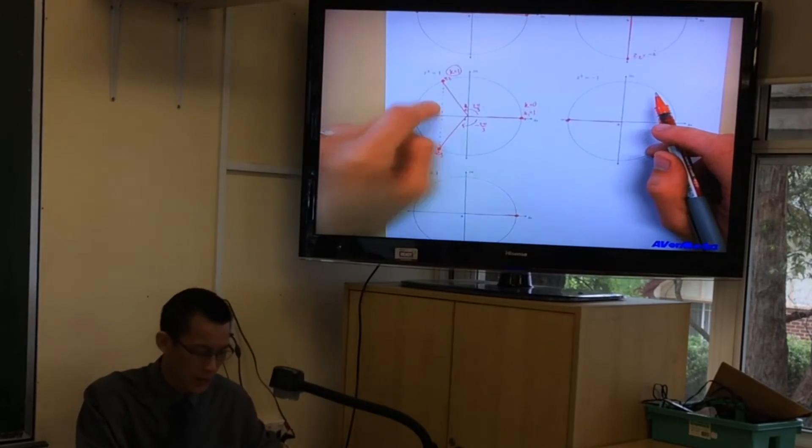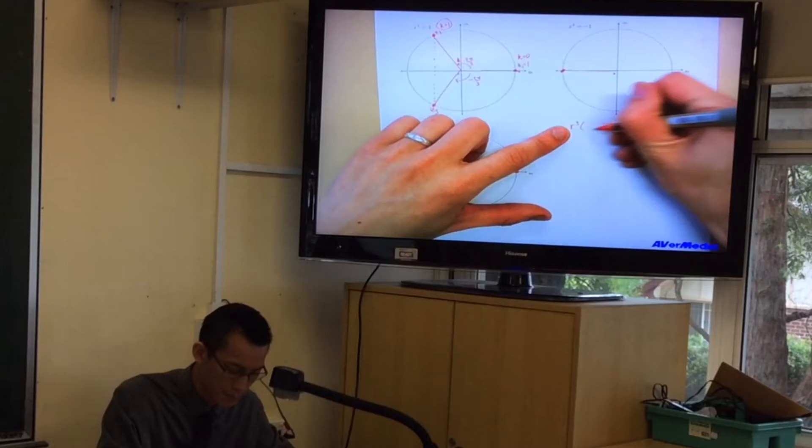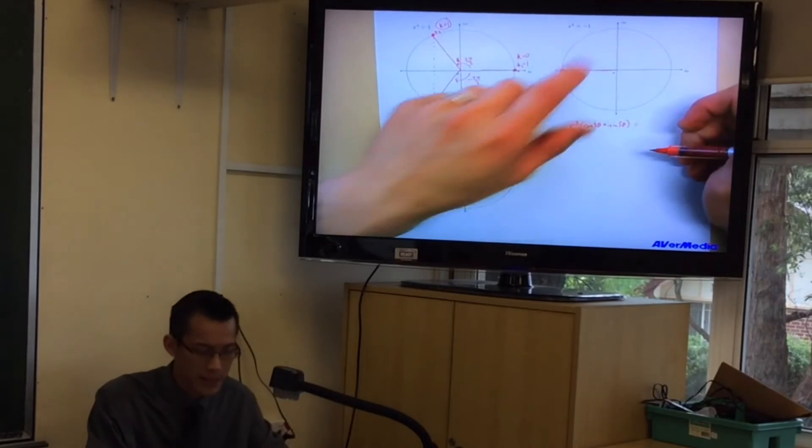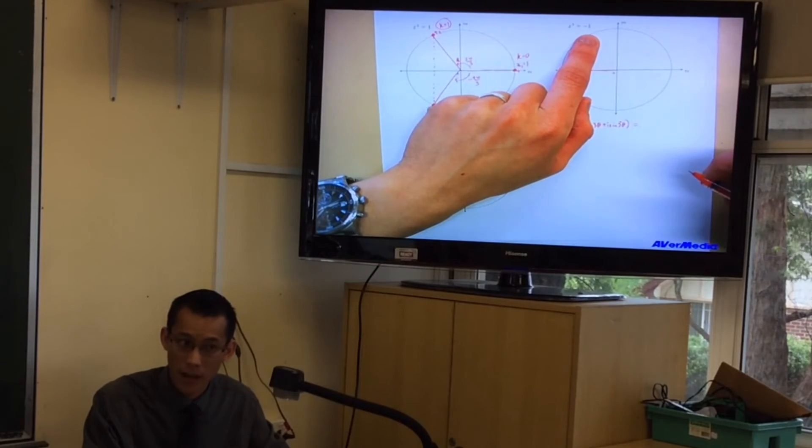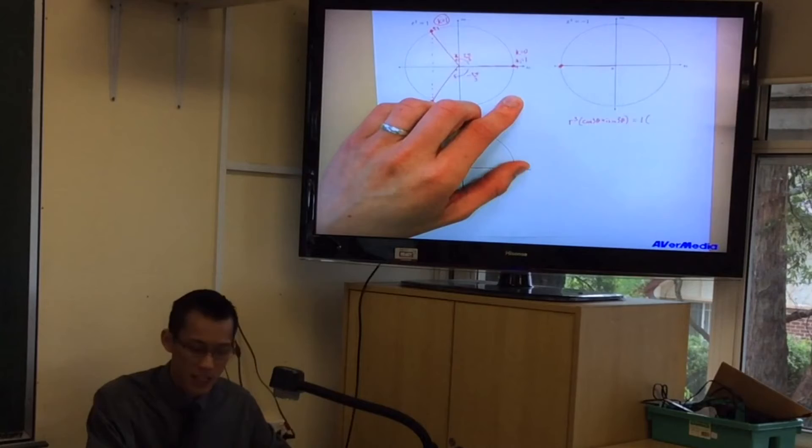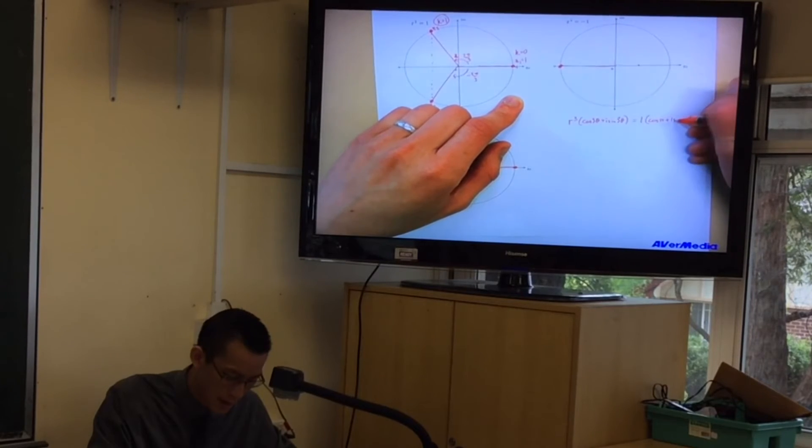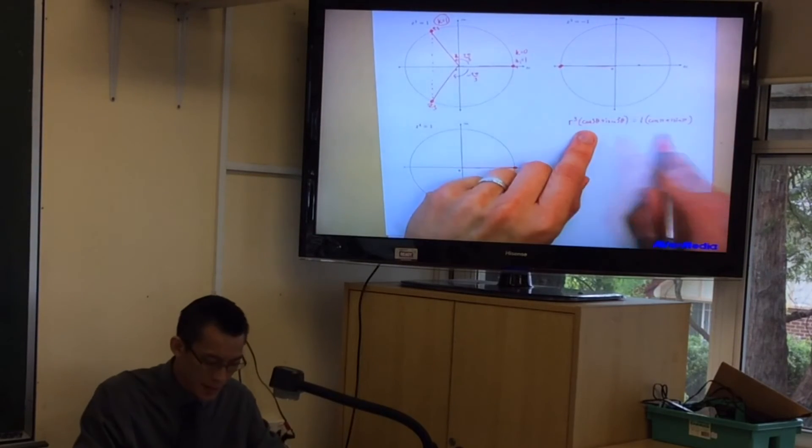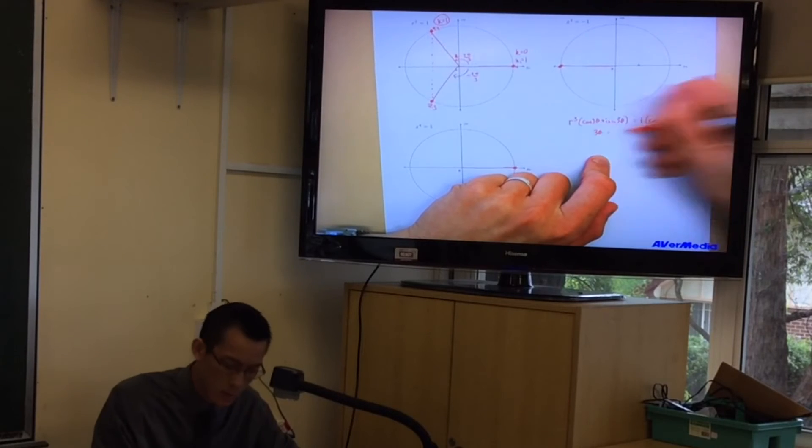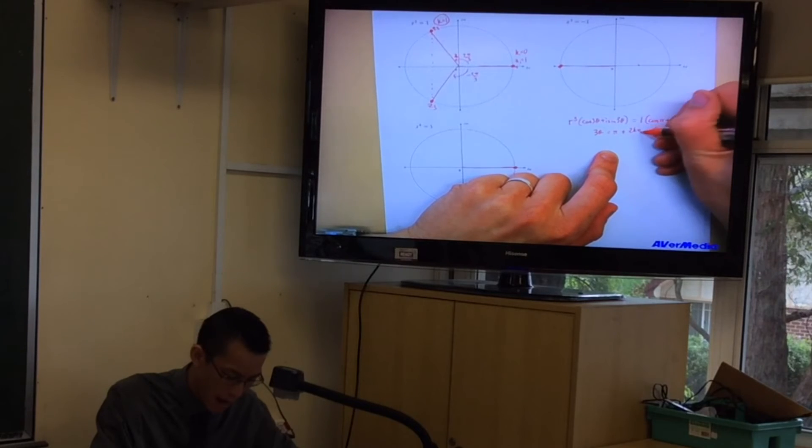So z cubed equals negative 1. By De Moivre's theorem, I can state that r cubed cos 3θ plus i sine 3θ. What's it equal to? What is negative 1 in mod arg form? It has a modulus of 1, because that's its distance from the origin. And what is the argument that takes me from the positive real axis all the way around to negative 1? π. Pi, very good. So, I've got cos π plus i sine π. Now, from this, the modulus is fine. I mean, we're on the unit circle, so no big deal. But when I look at the angle, 3θ equals π plus 2kπ.